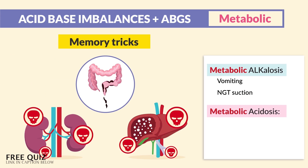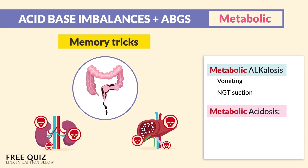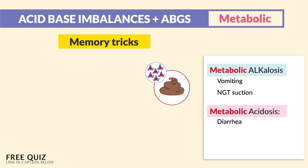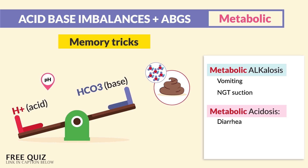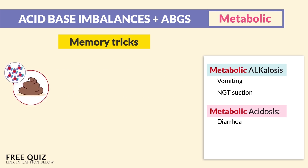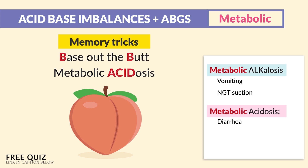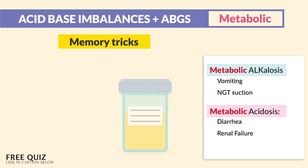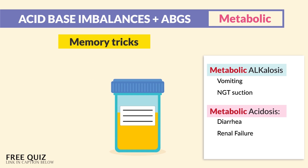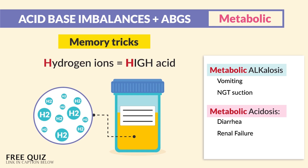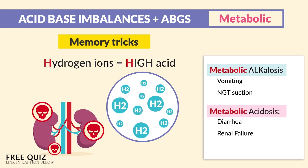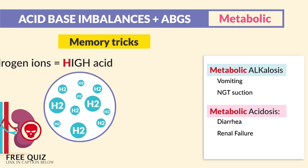For metabolic acidosis, we have diarrhea, renal failure, and DKA — that's diabetic ketoacidosis. For diarrhea, you poop out all of your base, which leaves the body in acidosis because only acid is left. Just think: if base comes out of your butt, you're only left with acidosis. And in renal failure, you retain too much urine — urine is an acid due to high hydrogen ions. The memory trick: if your kidneys fail, then acid prevails.